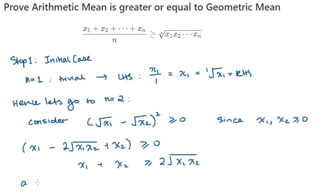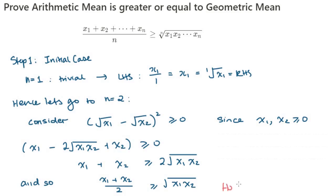we have x₁ + x₂ ≥ 2√(x₁x₂), and dividing both sides by 2 gives us the inequality for two terms, when n is equal to 2. And when n equals 2, this is our initial case.